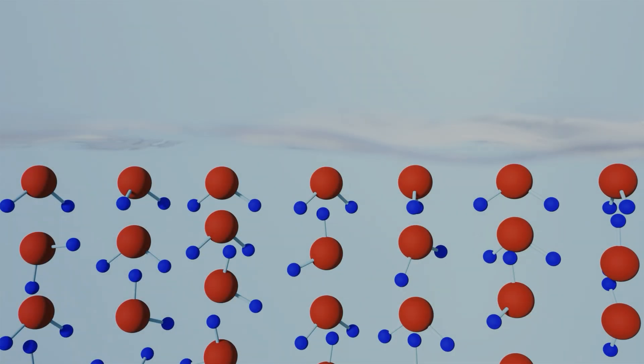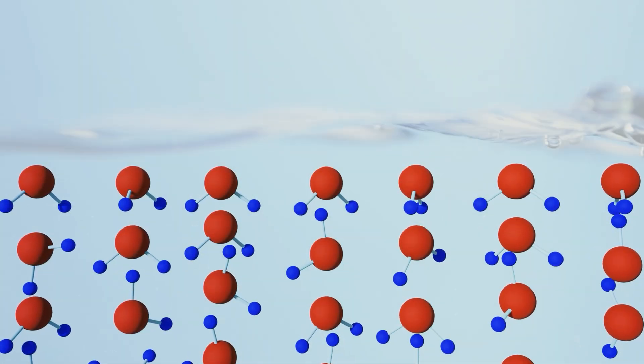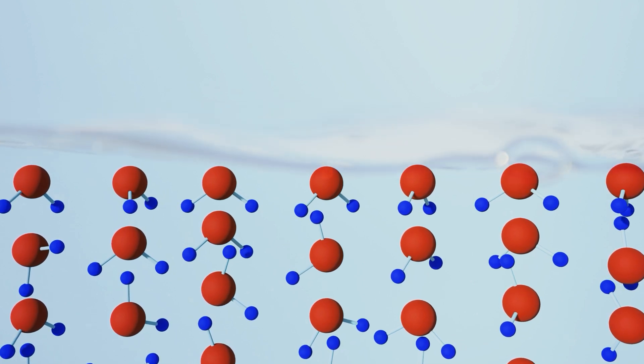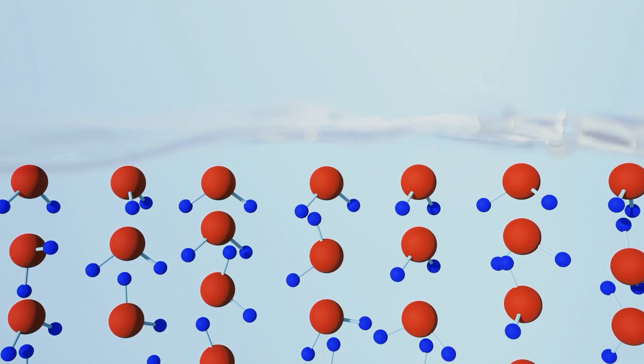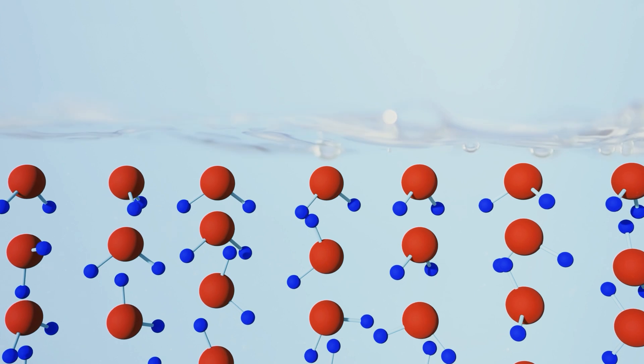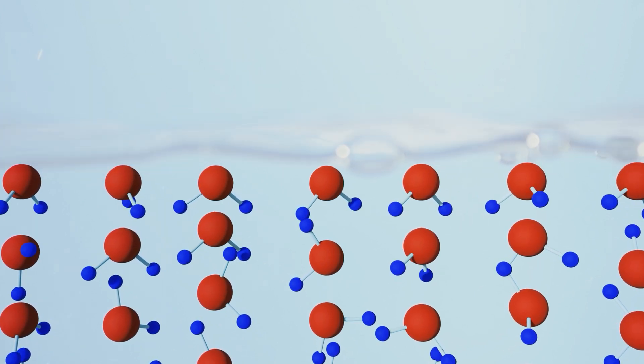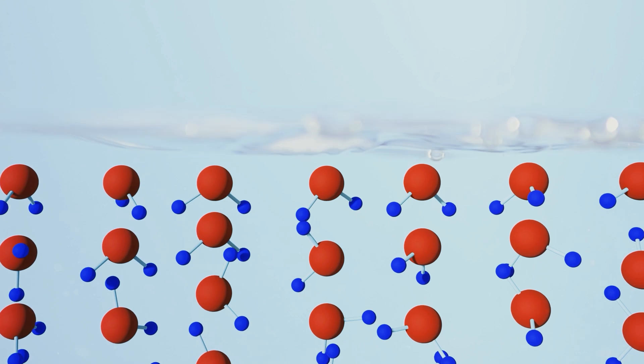Now let's take a closer look at the surface molecules. In its liquid state, the water molecules are constantly moving and forming hydrogen bonds with their neighbouring molecules all around them. But the molecules at the surface, however, have no other molecules above them to form hydrogen bonds with. This results in an imbalance of forces.